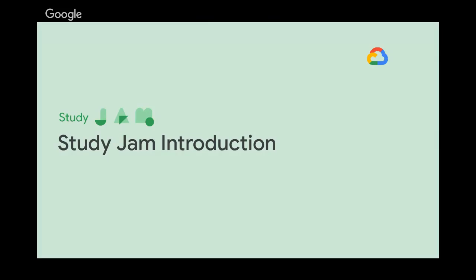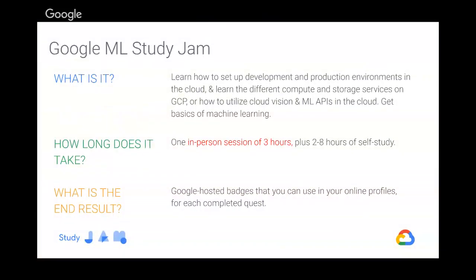In the Study Jam, we are going to learn how to set up development and production environments in the cloud, and how to use Machine Learning, TensorFlow and APIs. This is a live session of three hours, after which you can finish the rest of the QuickLabs, which can take from two to eight hours. As an end result, you will get badges from QuickLabs from Google and a certificate of attendance.